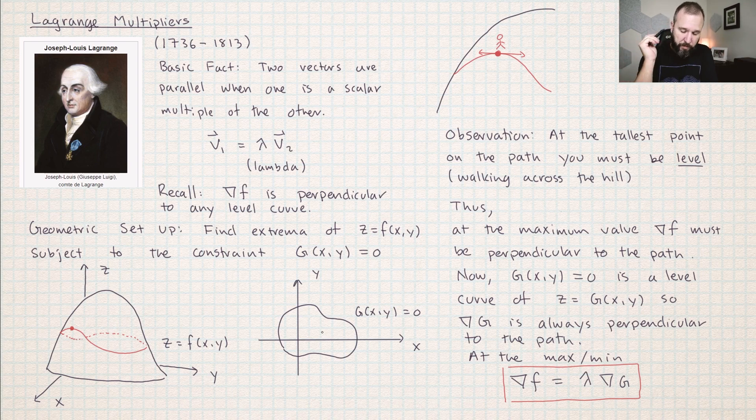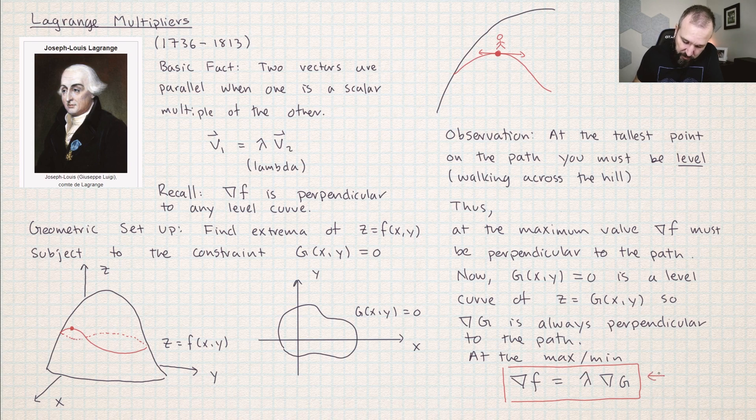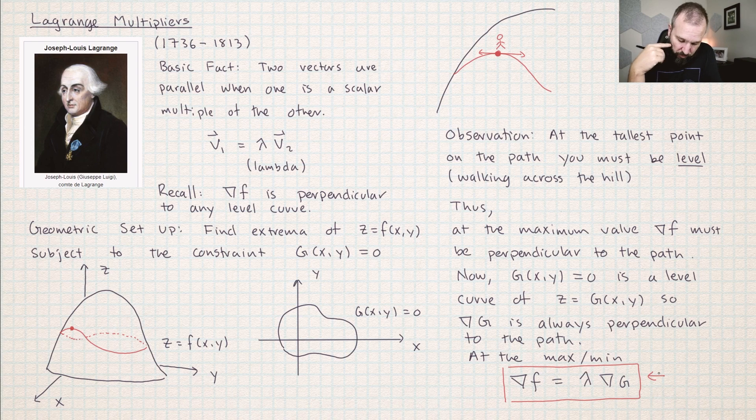What does that mean in terms of solving a problem? I can actually use this to look for points just like I was looking for critical points before. I know that at the maximum value, the gradient of f must be perpendicular to the gradient of g. So if I can just find all the places where that happens, then I know that one of them must be the maximum value. So that's the theory behind the method of Lagrange multipliers.